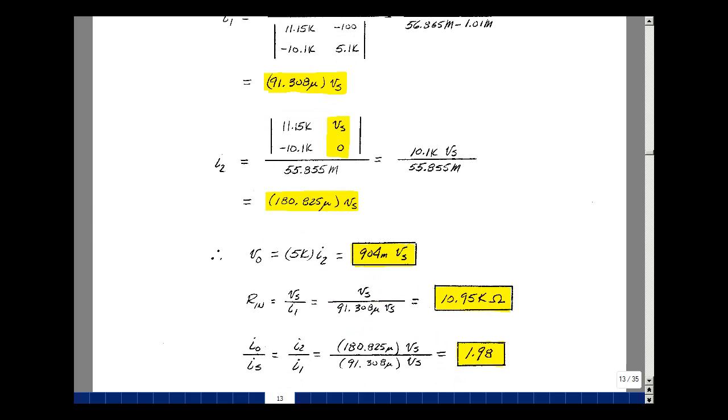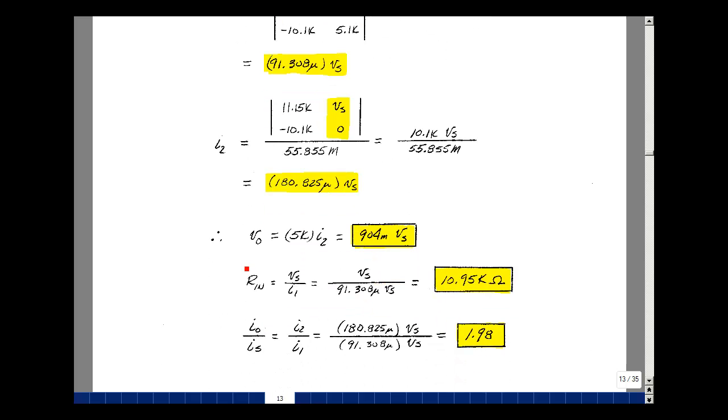Now we can go back to our formulas on our previous page. I'll solve for V out, which was 5K times I2. Gives me 0.904 times V sub S. The ratio of V sub S to I1 is R in. So V sub S and then I1 was equal to 91.308 micro V sub S. The V sub S's cancel, and the reciprocal of that is 10.95K. I out was I2, I S was I1. V sub S again drops out and I get a value of 1.98.